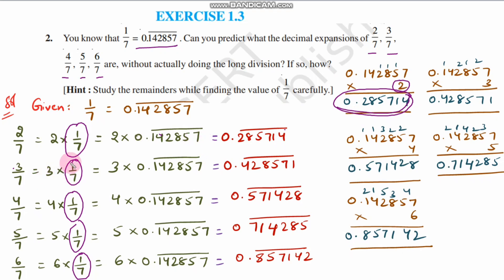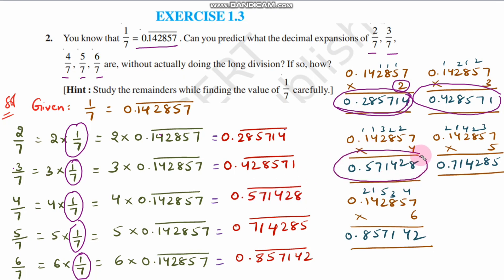Next, 3 by 7: 3 times 0.142857 bar equals 0.428571 bar. For 4 by 7: 4 times 0.142857 bar equals 0.571428 bar. For 5 by 7: 5 times 0.142857 bar equals 0.714285 bar. The answer for 5 by 7 is 0.714285 bar.